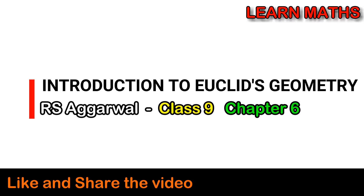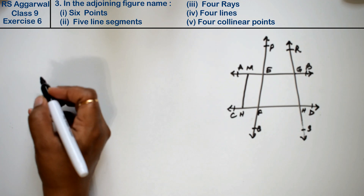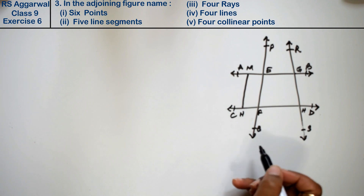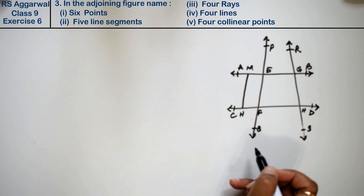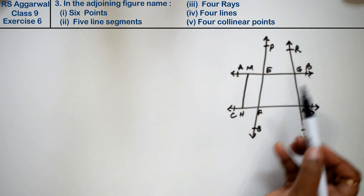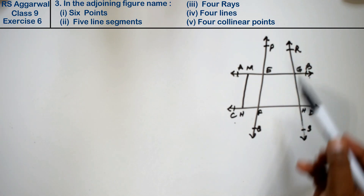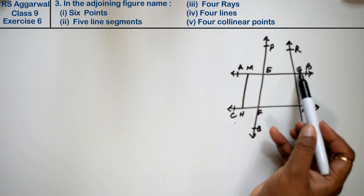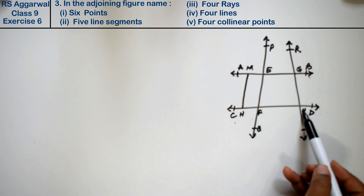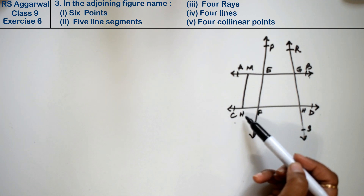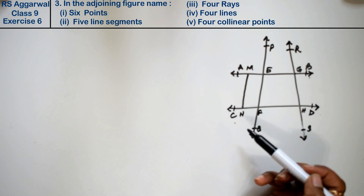Let's do question no. 3 of Exercise 6, that is Introduction to Euclid's Geometry. In the given figure, we have lines AB, CD, PQ, and RS, where the intersection points are E, G, H, and F respectively, and there is also a line called MN.